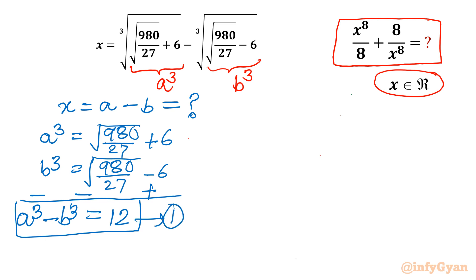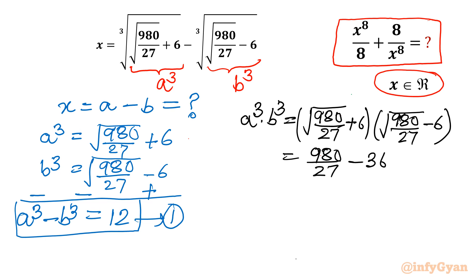Now I will take the product of a cube and b cube. So I will write a cube times b cube equals square root 980 over 27 plus 6 in one bracket, and in the second bracket the same thing with a negative sign in between. This is a plus b times a minus b, which equals a square minus b square. So I can write 980 over 27 minus 6 square which is 36, the difference of two squares. Now I will take the LCM: 980 over 27 minus 27 times 36, which is 972 over 27, so it equals 8 over 27.